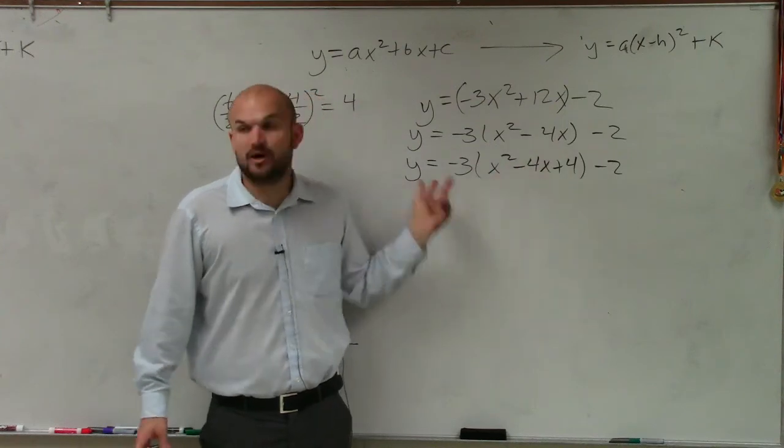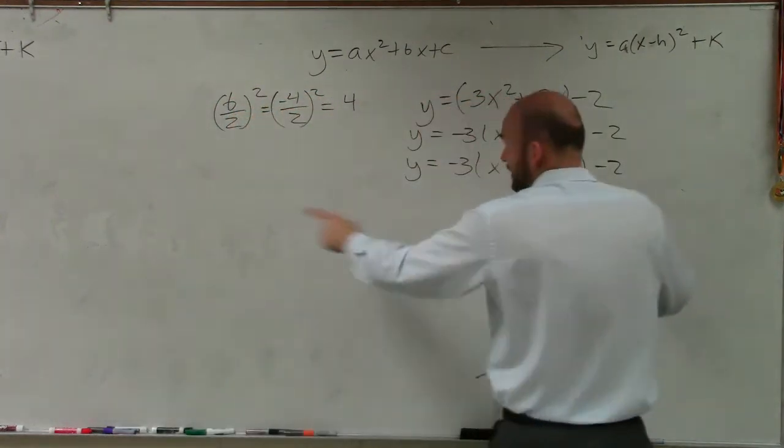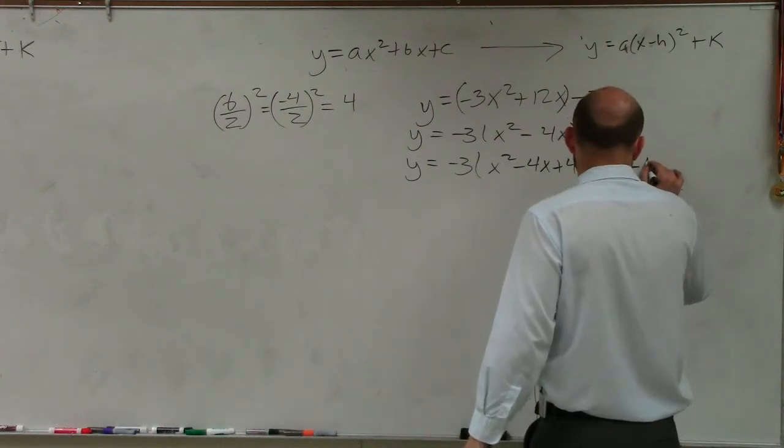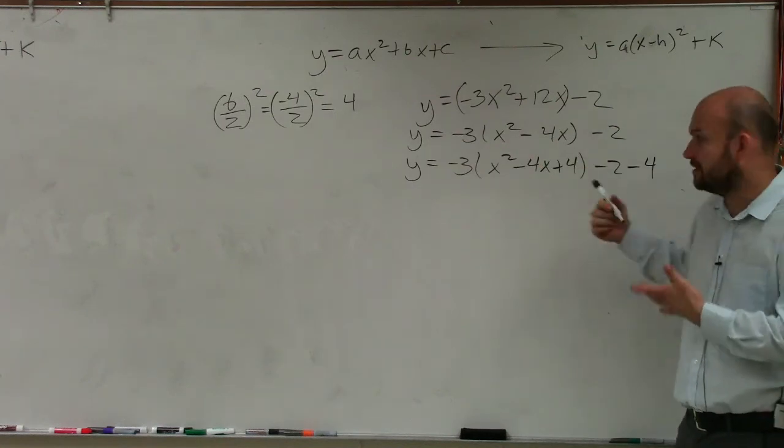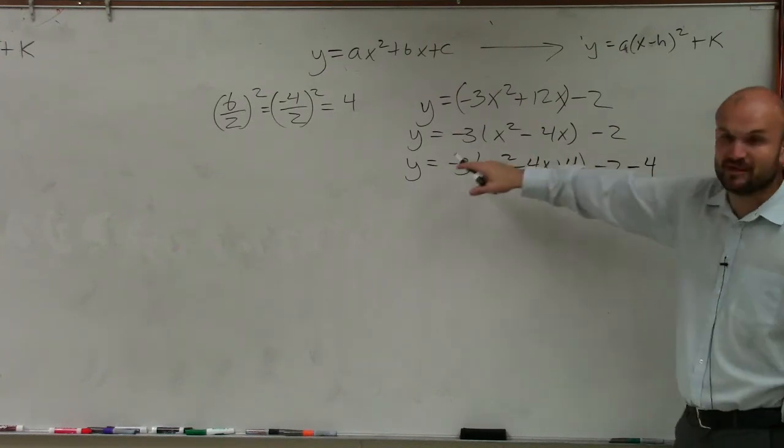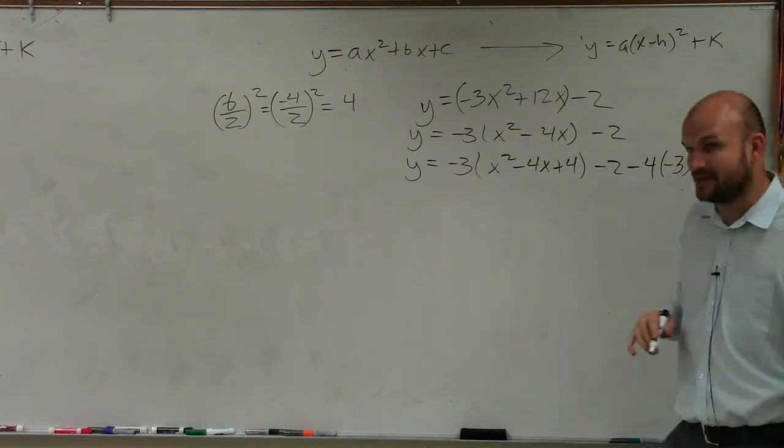Because that's a 4 being multiplied by negative 3. So if I add a 4, just like I showed you guys before, whenever you add a 4, you have to subtract a 4, right? If you're doing it on the same side. You add a 4, subtract 4. But since this 4 is being multiplied by negative 3, this 4 needs to be multiplied by negative 3.